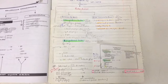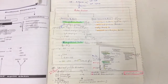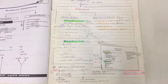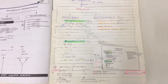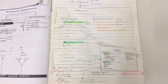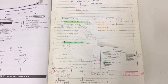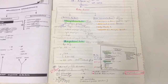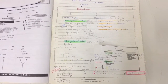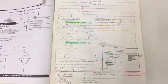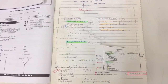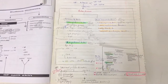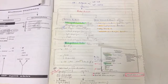Sub-epidermal bullae with eosinophilic infiltrate include bullous pemphigoid, cicatricial pemphigoid, and herpes gestationis. Sub-epidermal bullae with neutrophils include epidermolysis bullosa acquisita, bullous systemic lupus, dermatitis herpetiformis, and chronic bullous disease of childhood. Sub-epidermal bullae with lymphocytes include bullous lichen planus. Sub-epidermal bullae with mast cells include bullous mastocytosis.